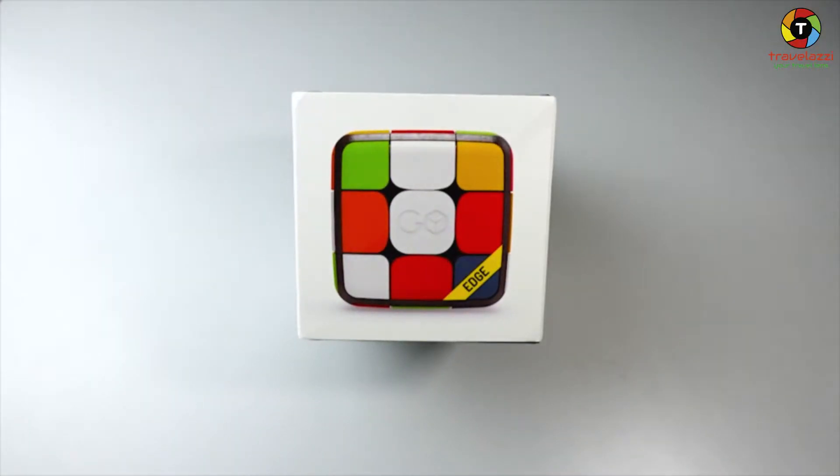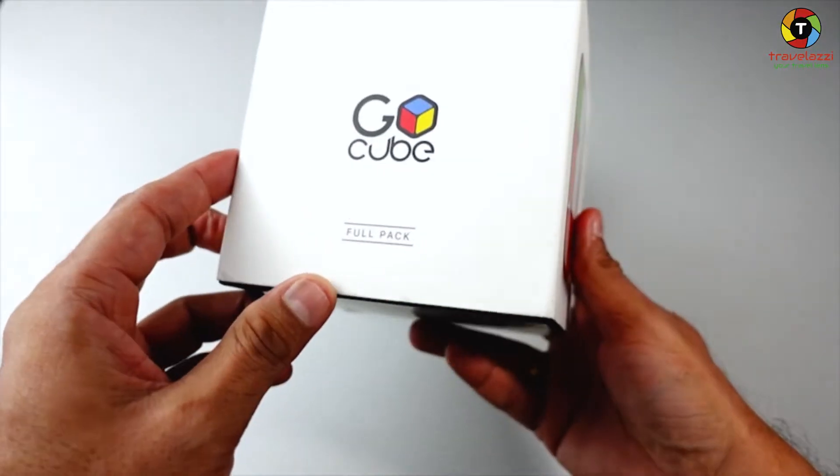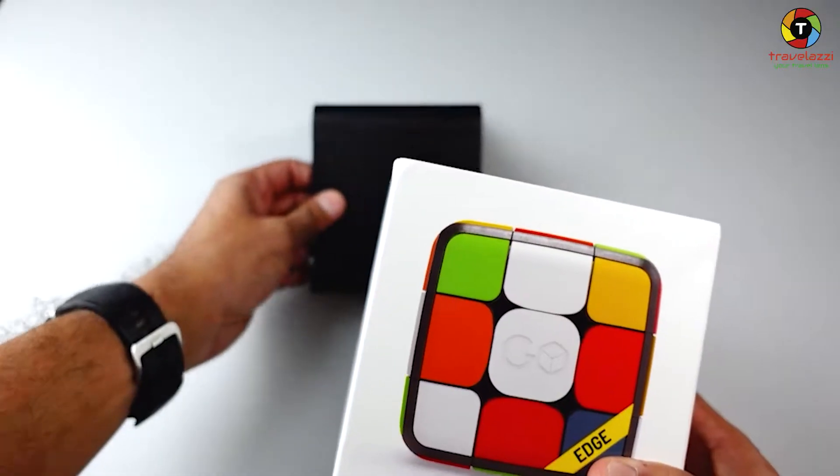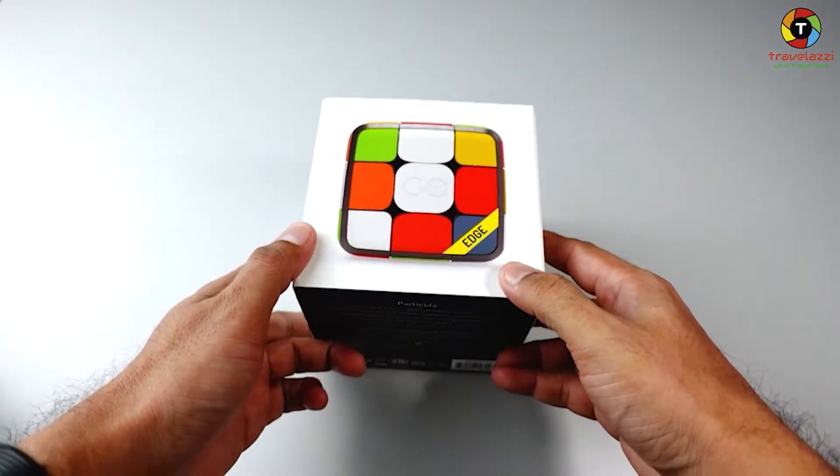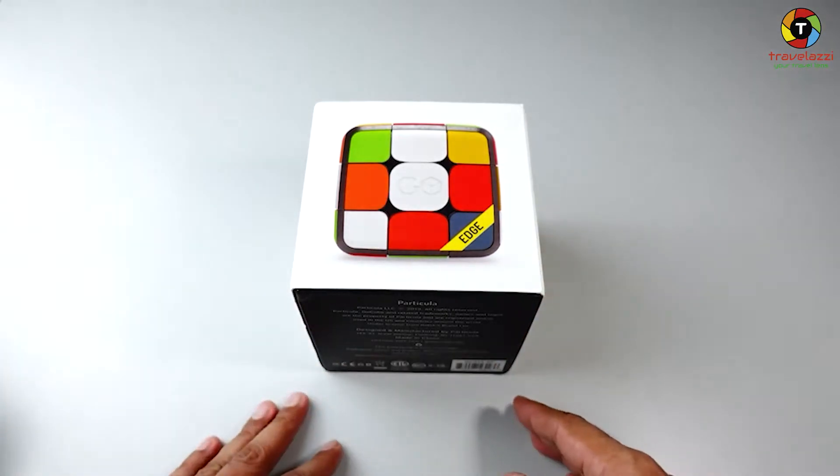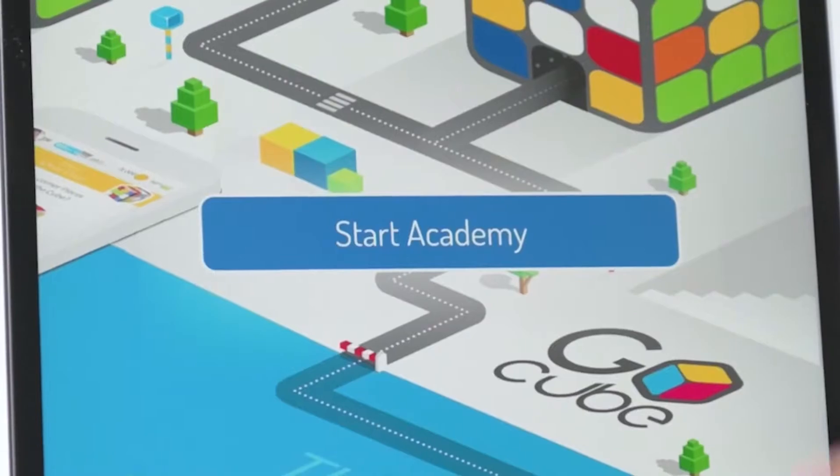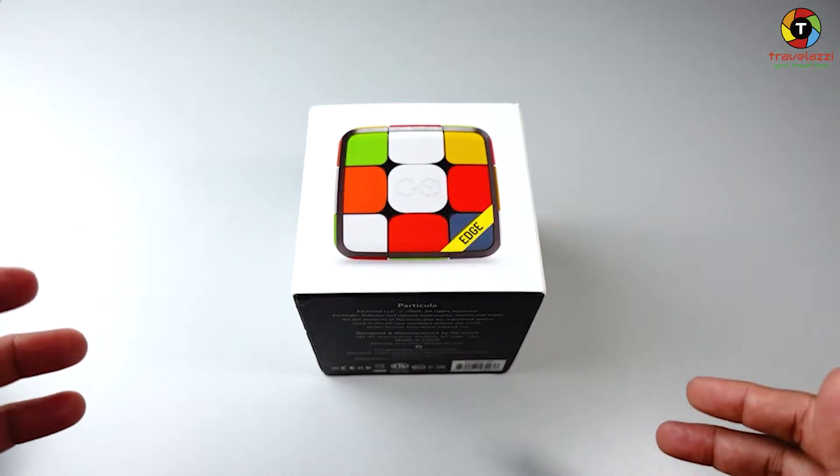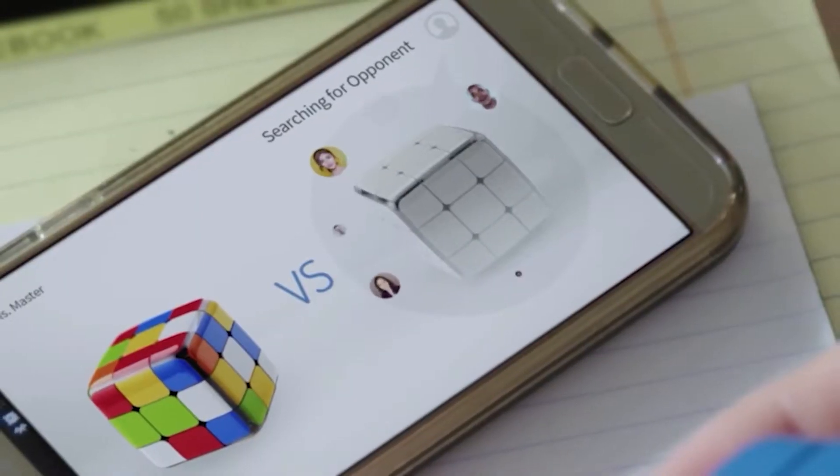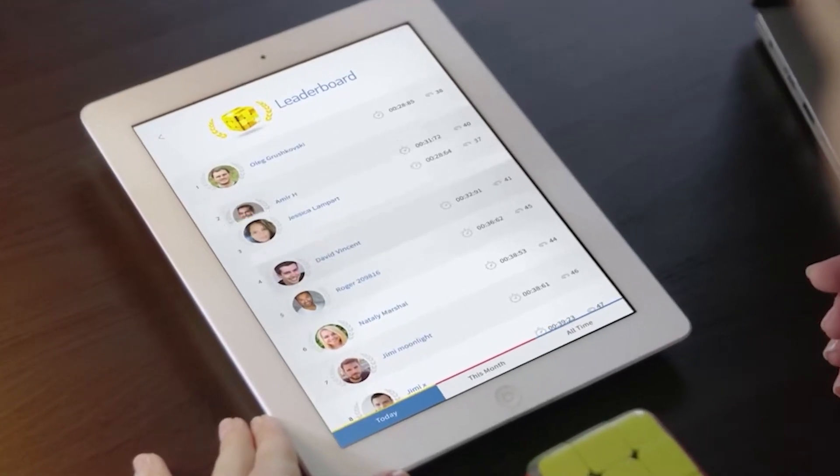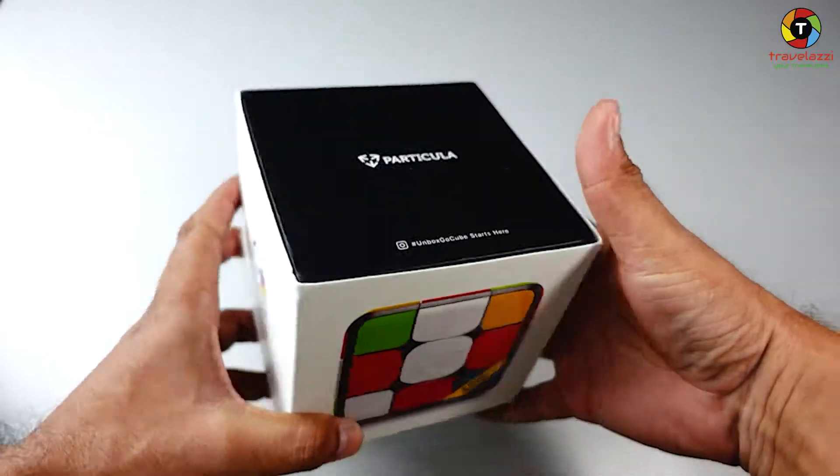Hello everyone, today we are going to do the unboxing and quick review of the Smart Go Cube Edge. The Go Cube is a smart connected cube that you can connect with your smart device. There is a supporting application which teaches you how to solve the Rubik's Cube, and there are online platforms where you can compete with other people around the world. It's a big package of excitement and I'm very excited to play with this device.